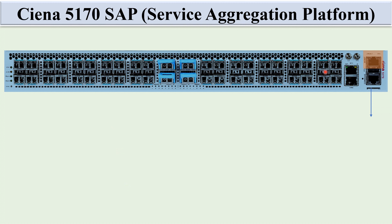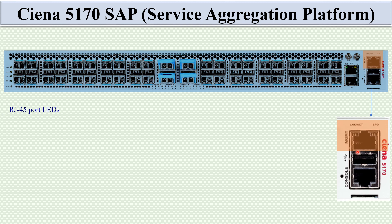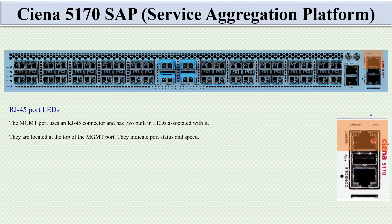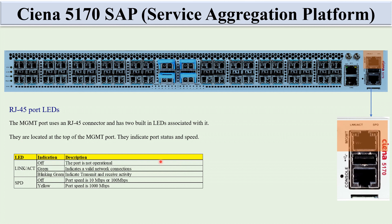The management port uses RJ45 connectors and has two built-in LEDs located on the top of the port: Link/Act and SPD. For Link/Act: off means the port is not operational; green means a valid network connection; blinking green means transmit and receive activity. For SPD: off means port speed is 10 Mbps or 100 Mbps; yellow means port speed is 1000 Mbps.